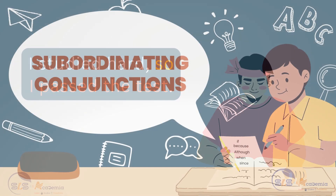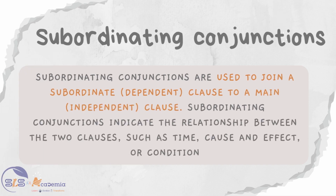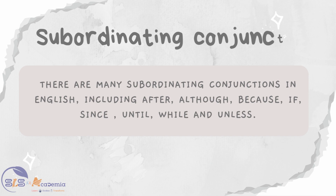Now let us learn about subordinating conjunctions. Subordinating conjunctions are used to join a subordinate or dependent clause to the main or independent clause. They indicate the relationship between two clauses, such as time, cause and effect, or condition. There are many subordinating conjunctions in English, but some of the commonly used ones are: after, although, because, if, since, until, while, and unless.